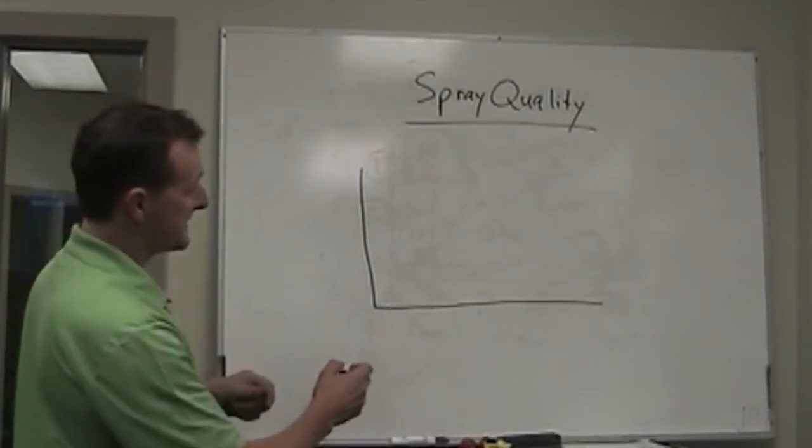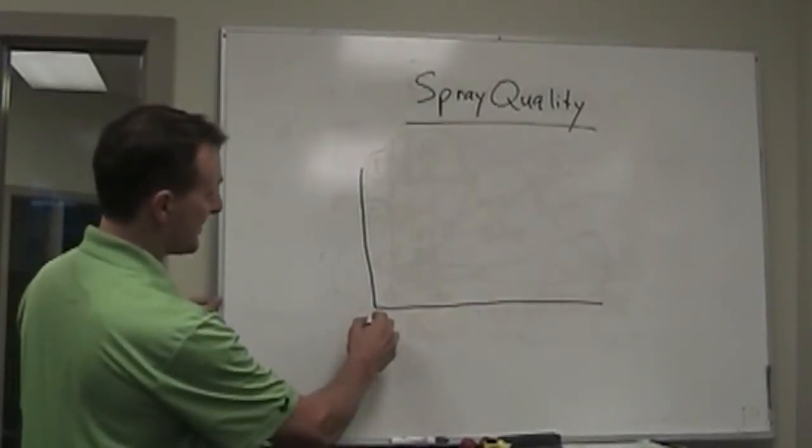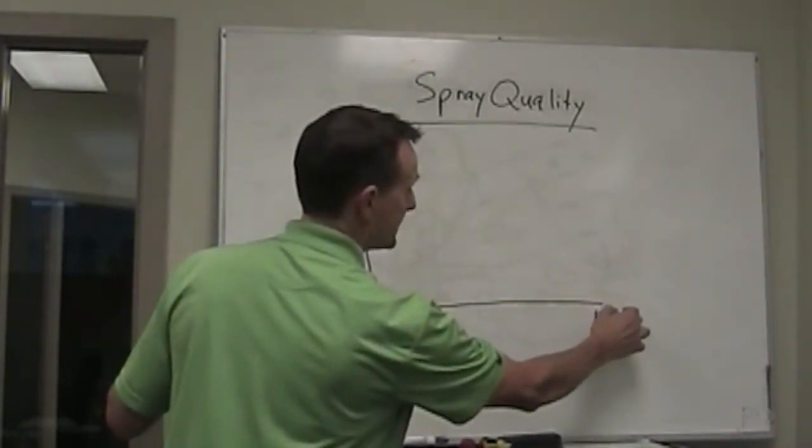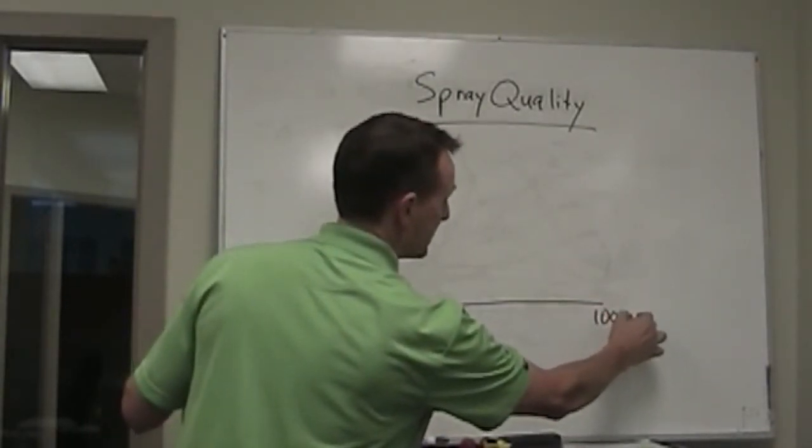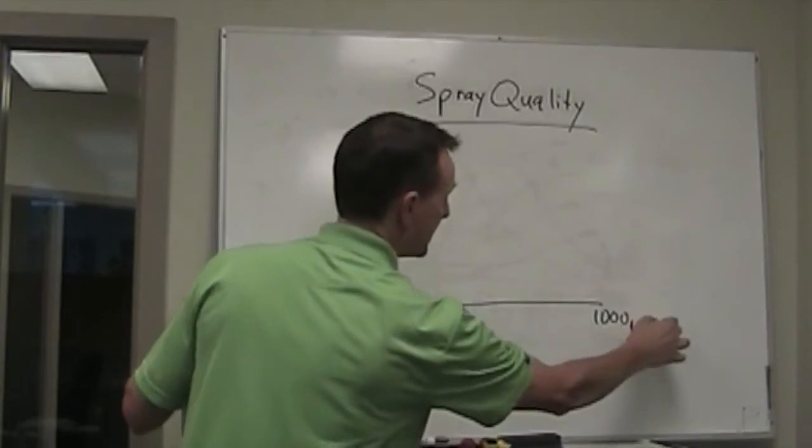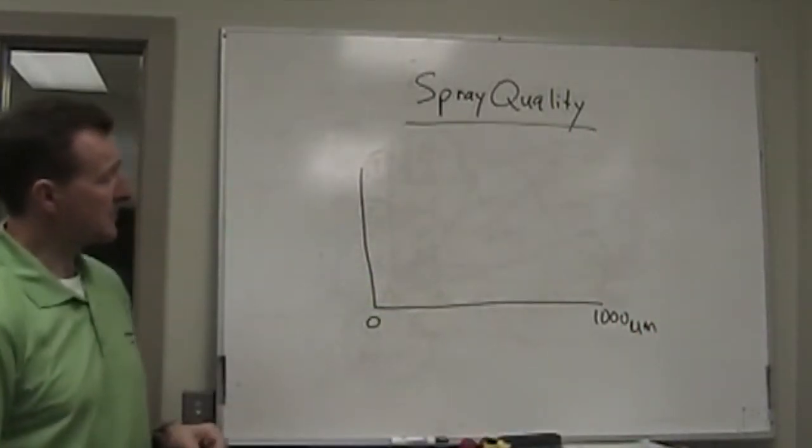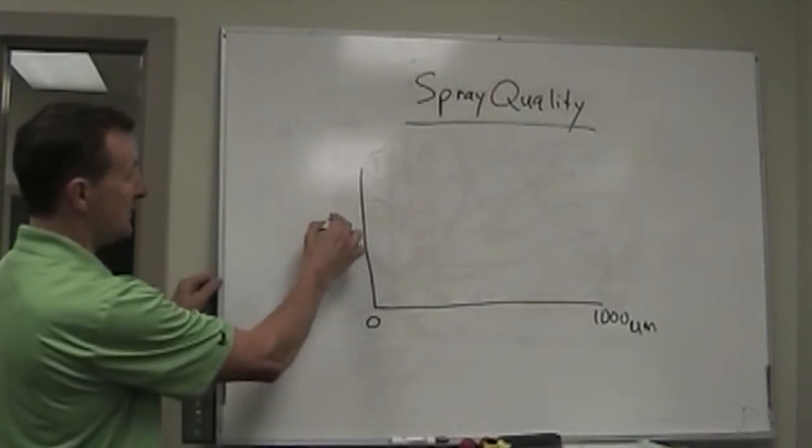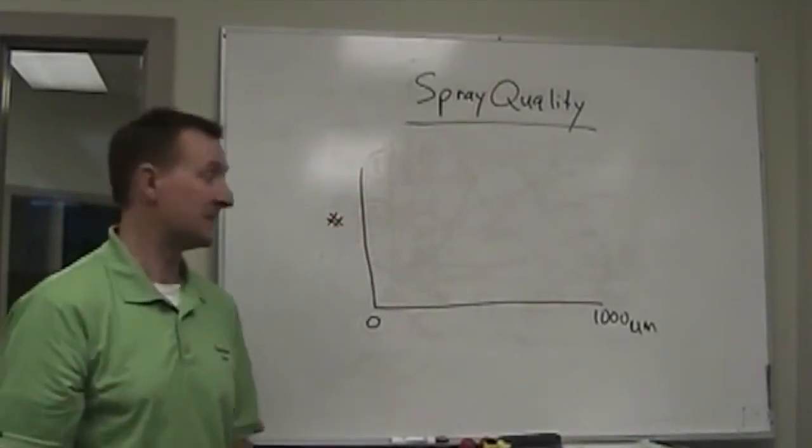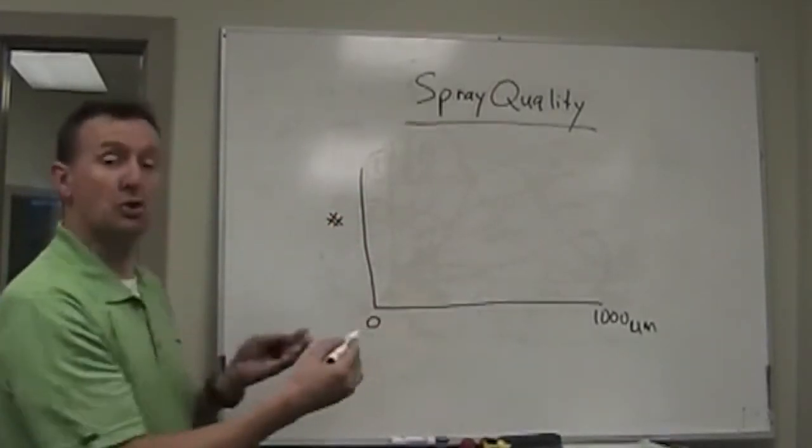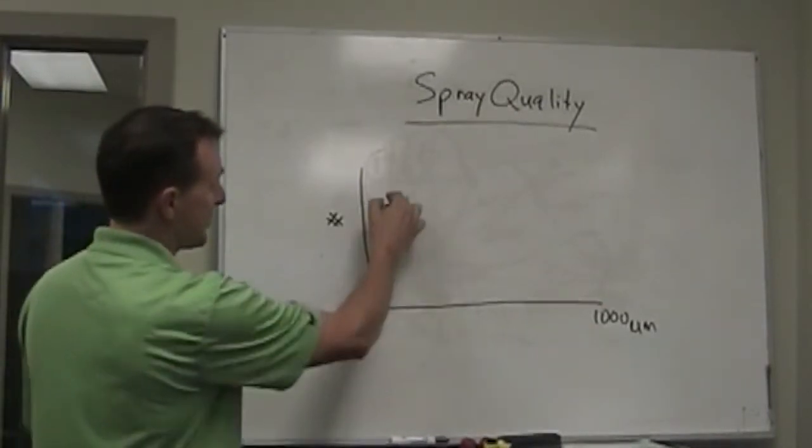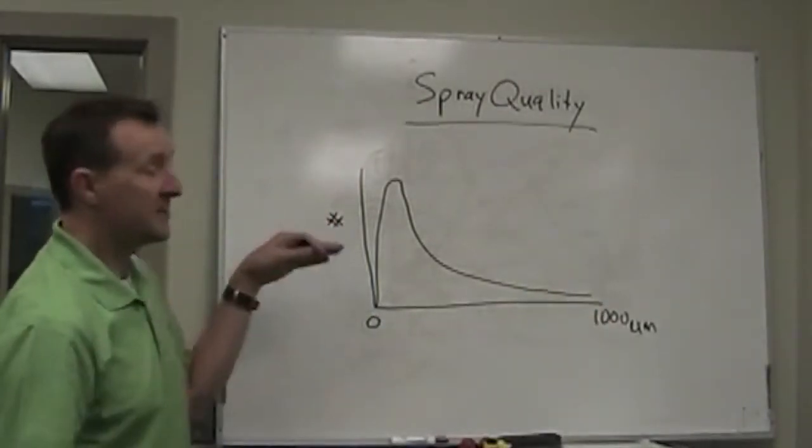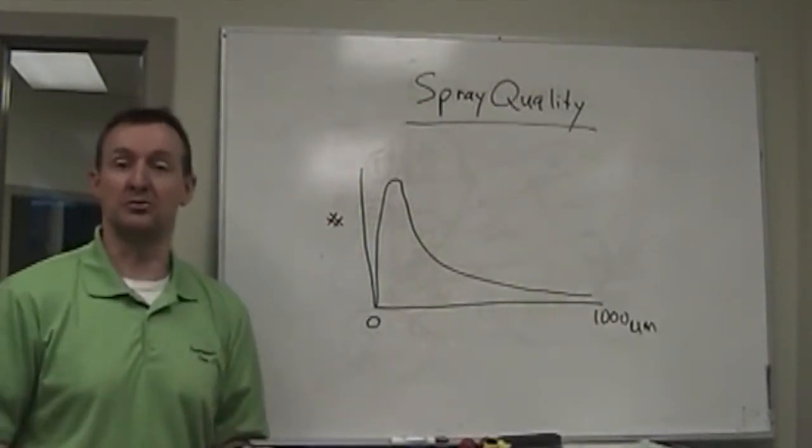The first thing we find is if we look at the droplet diameter here on the x-axis, say from zero to a thousand microns, and I think a thousand microns is a millimeter, we see a distribution like this. If we look at the number of droplets coming out of that nozzle, it almost always looks like this. There's a very sharp peak of many droplets near the y-axis here and then tapering off with very few larger droplets.